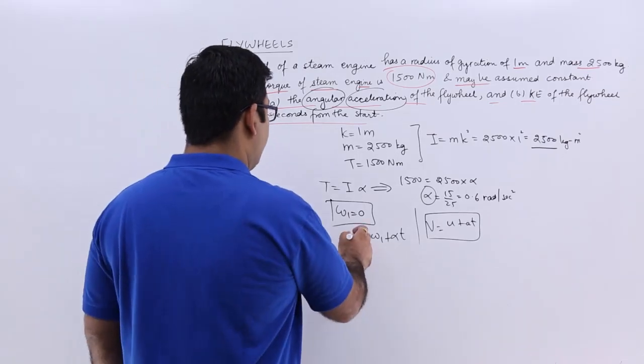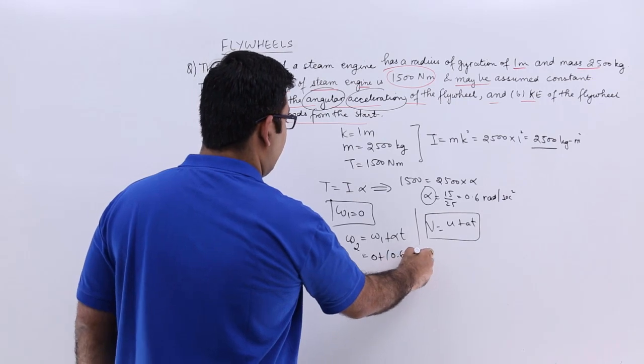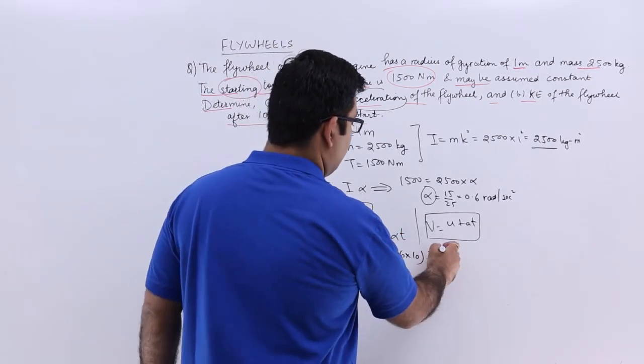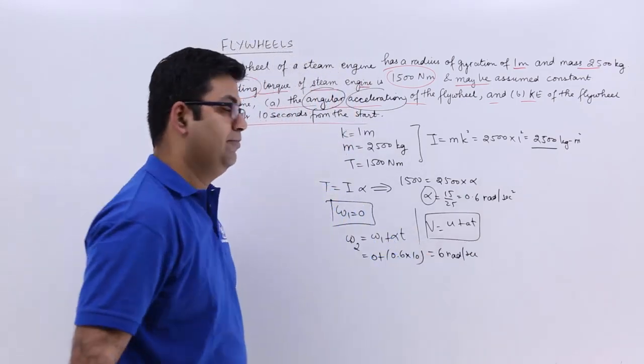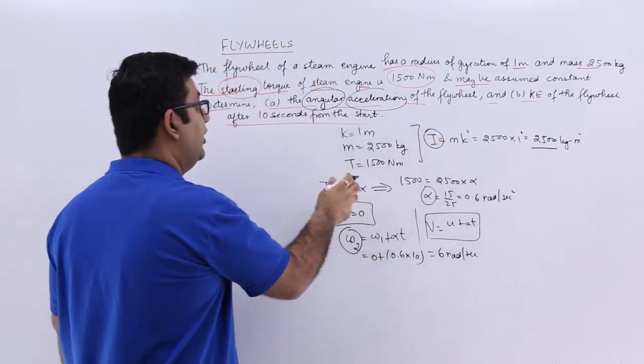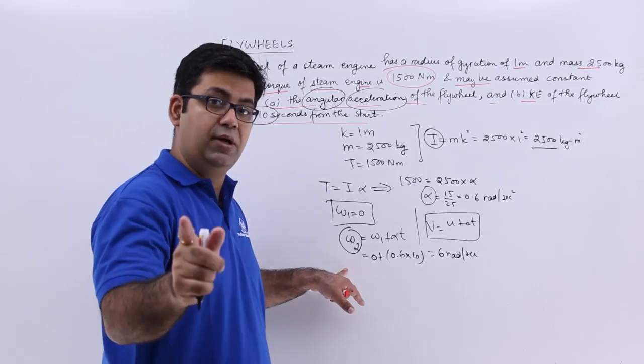From here I can find omega 2, which is 0 plus 0.6 times 10, giving omega 2 as 6 radians per second. With this value, I can find the kinetic energy after 10 seconds, because that is the velocity after 10 seconds.